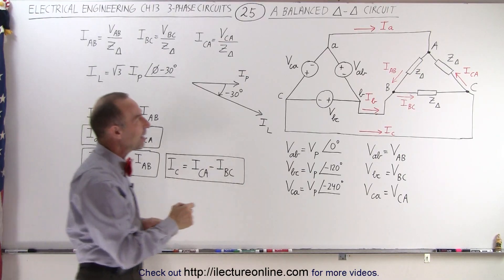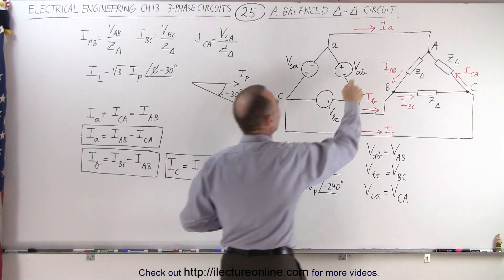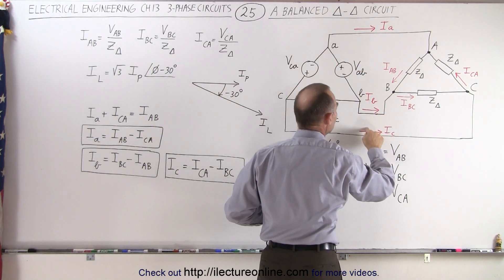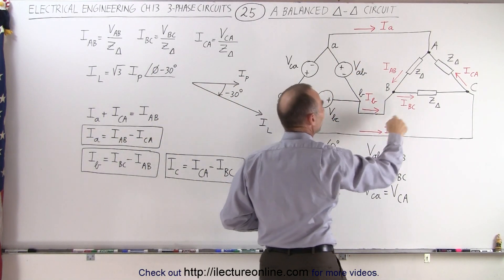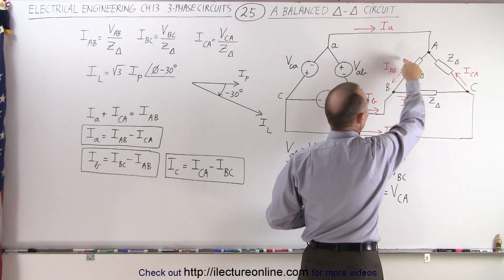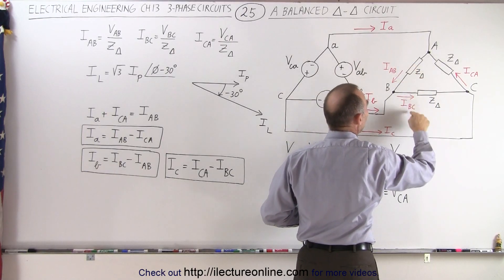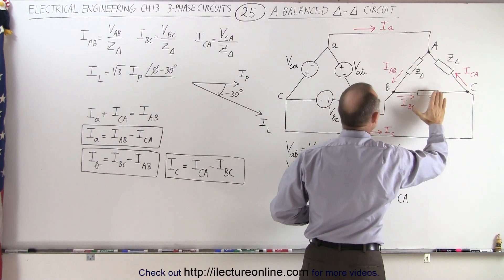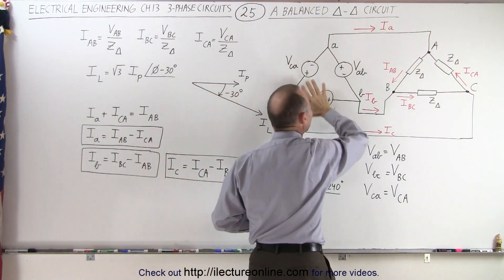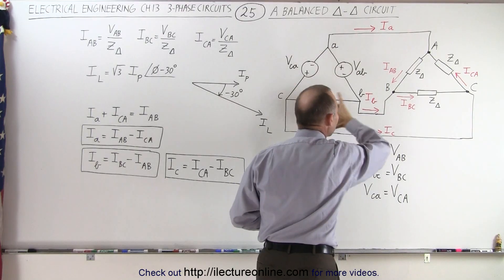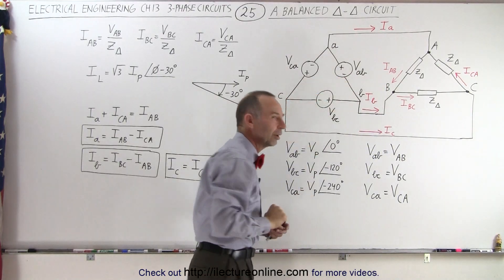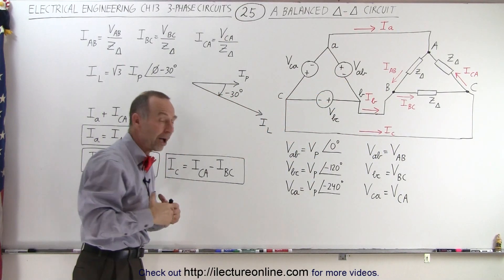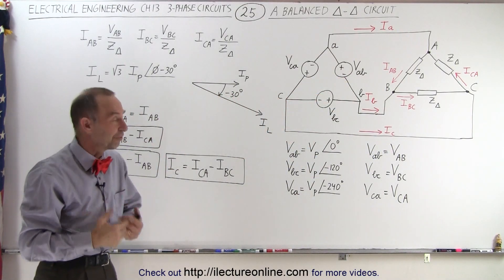We still have our line currents Ia, Ib, and Ic. We still have our phase currents IAB, IBC, and ICA. But now they're fed by a delta source circuit. So how does that make a difference?